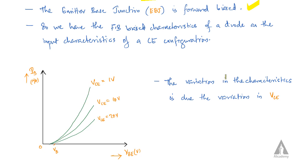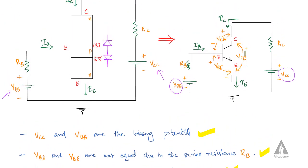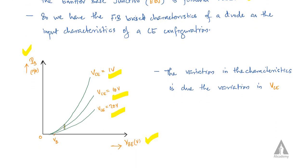The variation in characteristics is due to variation in VCE. We plot the graph with VBE on the x-axis and IB on the y-axis for different values of output voltage VCE. We are plotting the graph for different values of VCE.